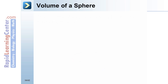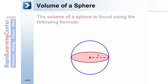Volume of a sphere. The volume of a sphere is found using the following formula: V equals four-thirds times pi times r cubed, where r is the radius of the sphere.